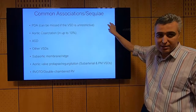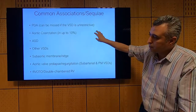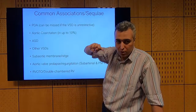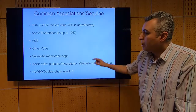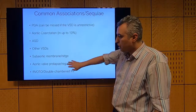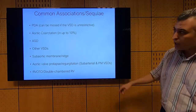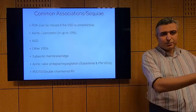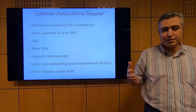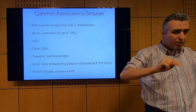Summary of associations: VSD can be associated with PDA — which can be missed if the VSD is large, so we routinely ligate the ductus during VSD surgery. Aortic coarctation, ASDs, and additional VSDs can coexist. Secondary associations include subaortic membrane, aortic cusp prolapse with regurgitation, and double-chamber right ventricle. Any patient with a VSD should have a checklist of common associations systematically excluded.